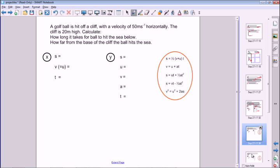Let's have a look at a problem. A golf ball is hit off a cliff with a velocity of 50 meters per second horizontally. It's quite useful to just jot down which quantities are x and which are y. This is the horizontal velocity, so this is an x component. In the x direction, the velocity is 50 meters per second.